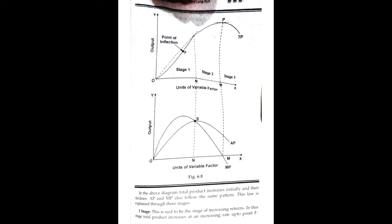From the first diagram, the y-axis shows output and the x-axis shows units of the variable factor. The total product curve rises to a maximum point P and then declines. In the second diagram, the marginal product and average product curves first rise and then decline, intersecting at a certain level of the variable factor.